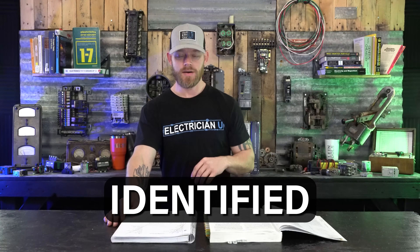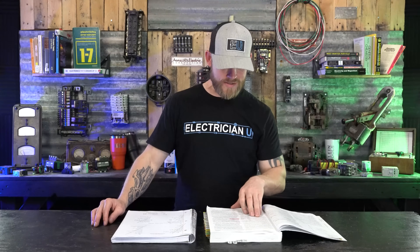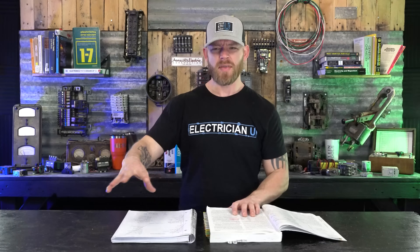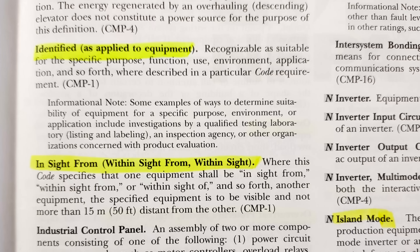The last term is identified. Identified means you're putting something on something to call it a name — essentially IDing it, recognizing it as suitable for the specific purpose, function, use, environment, and application where described in a particular code requirement. So a piece of equipment might need to be identified for its voltage, KVA rating, or horsepower. The people doing the identifying would be an authority having jurisdiction, UL, some kind of inspection agency, or testing laboratory — but it doesn't mean the same thing as listing or labeling. Those three terms get thrown around a lot and get confused.